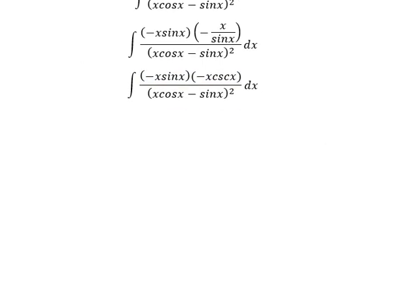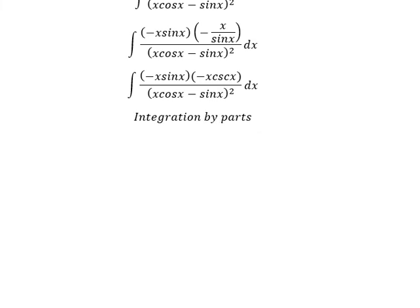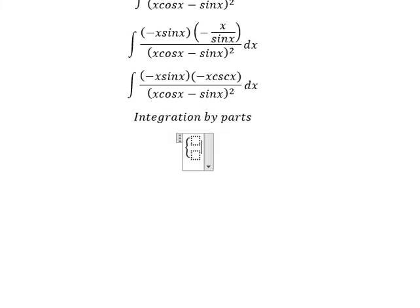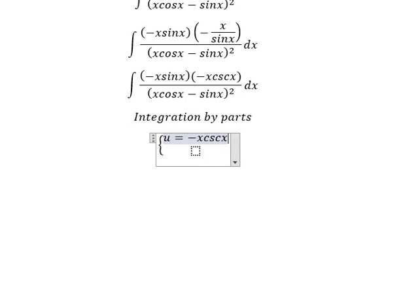Next we can use integration by parts. Because I want to treat negative x·sin(x) for integration by parts as dv. So we have u equal to negative x·csc(x).